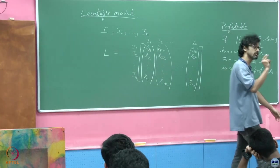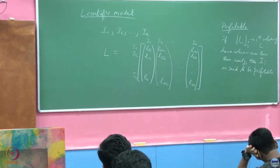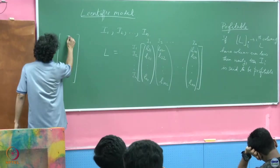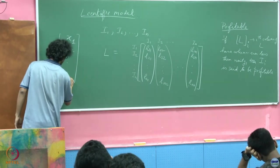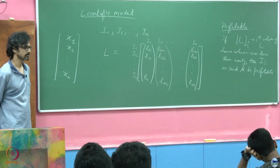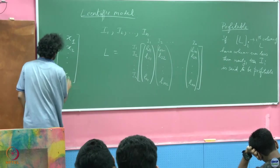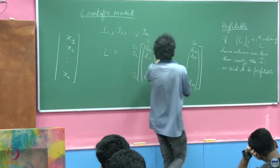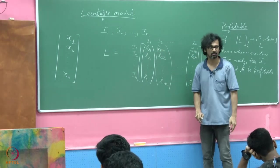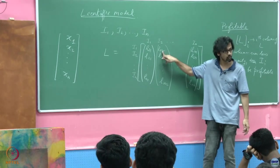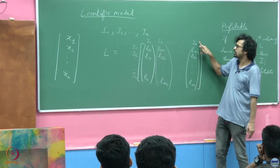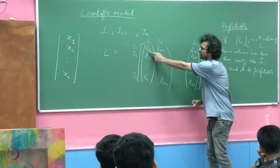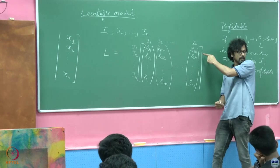How many units must each industry manufacture to just have sufficient for itself as well as for the others? Suppose each industry's manufacturing capacity is given by the vector (x₁, x₂, …, xₙ). Then x₁ units must equal the total consumed by all others: L₁₁x₁ + L₁₂x₂ + … + L₁ₙxₙ must equal x₁. This translates to Lx = x.